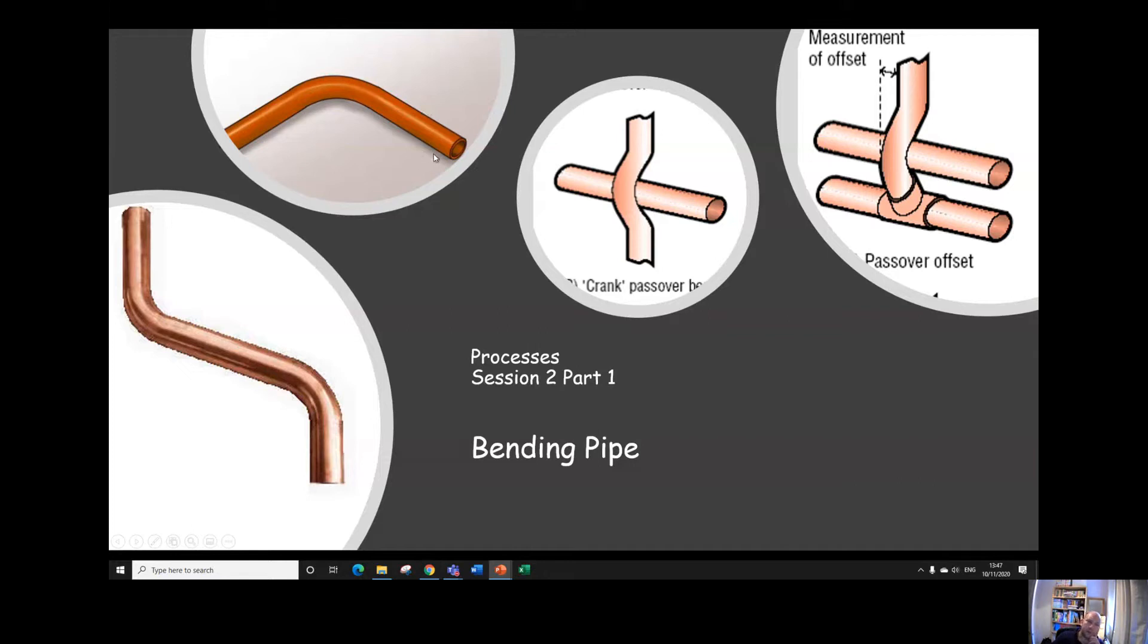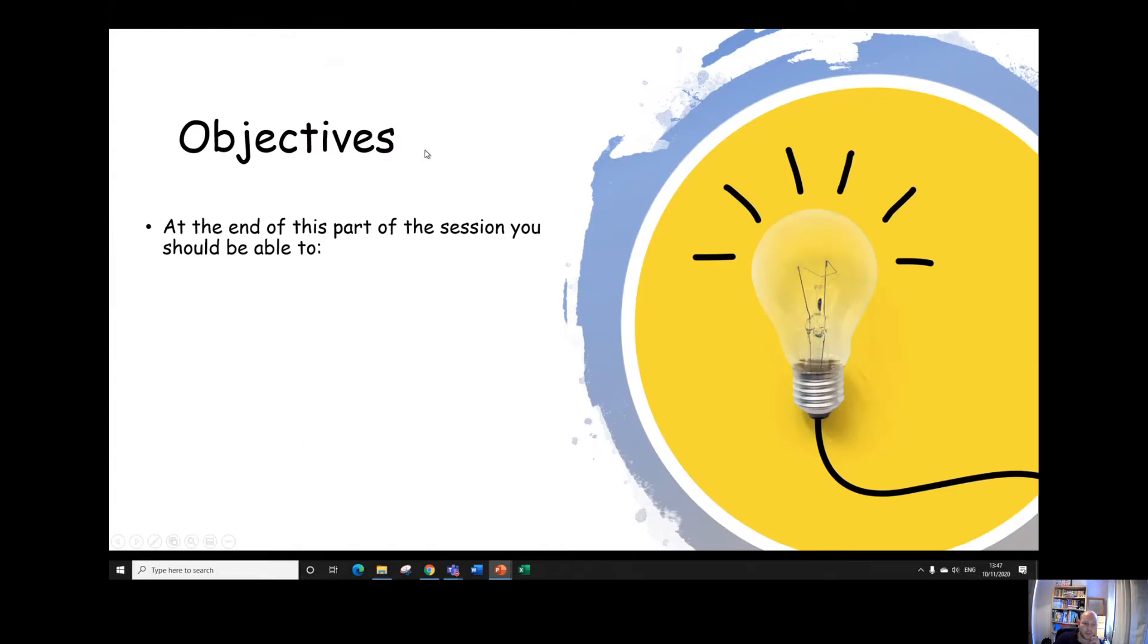Processes session two part one, we're going to look now at bending pipe. So the aims for this part of the session: I want you all to be able to explain why it's preferred to use formed bends rather than any sort of elbows, not just soldered elbows.